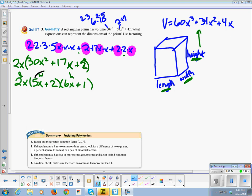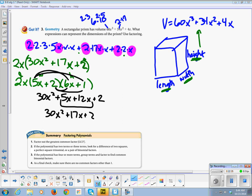So we're going to test it. I like the FOIL. 5x times 6x is 30x². 5x times 1 is 5x. 2 times 6x is 12x. 2 times 1 is 2. When I combine my like terms, I get 30x² + 17x + 2. And that is what I have up here. So I know that this is my correct answer. That my length is 2x, my width is 5x + 2, and that my height is 6x + 1.